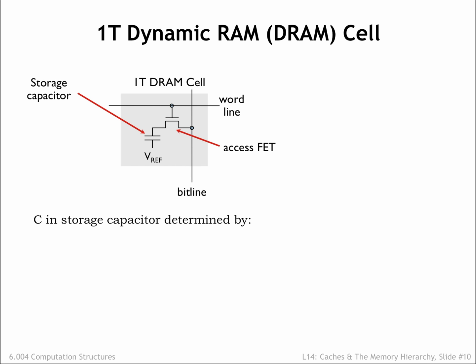We can increase the capacitance by increasing the dielectric constant of the insulating layer between the two plates of the capacitor, increasing the area of the plates, or by decreasing the distance between the plates. All of these are constantly being improved.